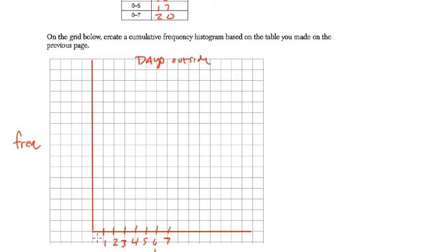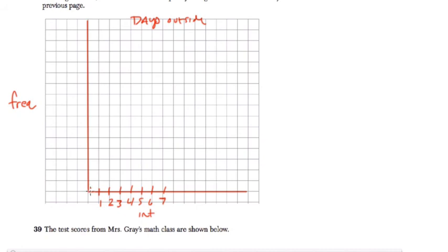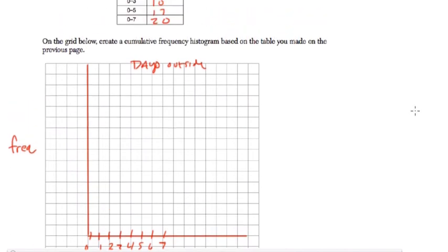So these are ranges, and I'm saying that this first range right here is from 0 through 1. And that range that we have here is 3. So we need to go up to 20, so I'm going to go up by 2s: 2, 4, 6, 8, 10, 12, 14, 16, 18, 20.